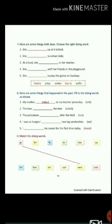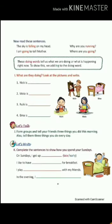Now, verbs in ing form. Children, these doing words tell us what we are doing or what is happening right now. We add ing to the base form of verb. For example: painting, eating, sleeping, cooking, etc. Here you have to write the verb in ing form by looking at the pictures.